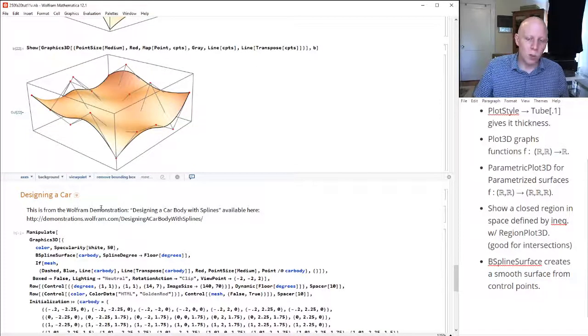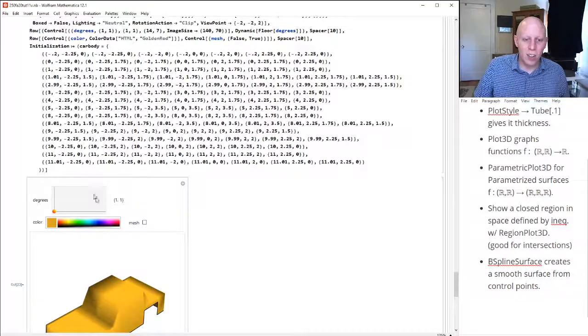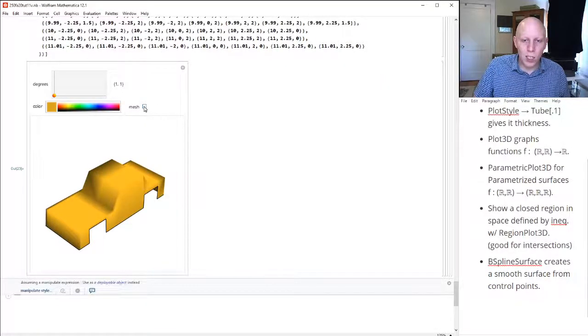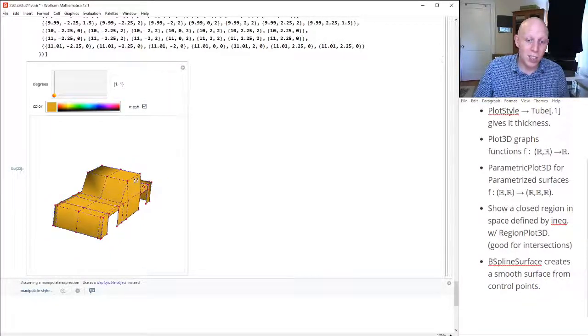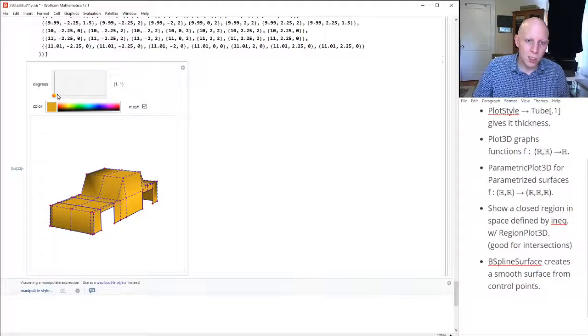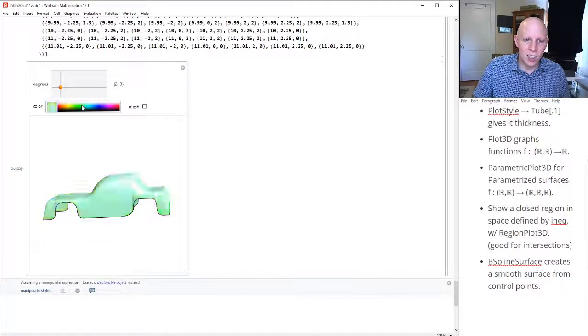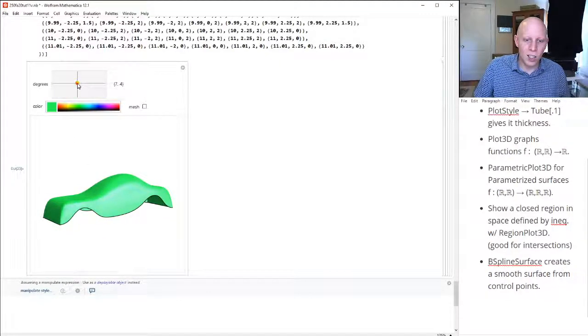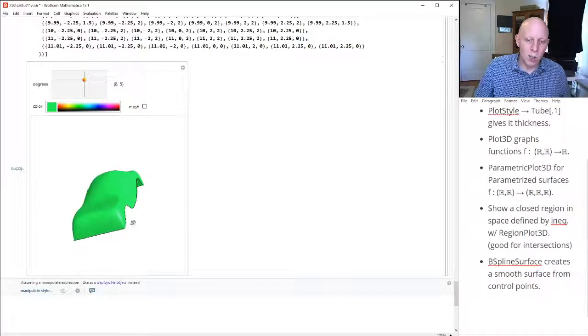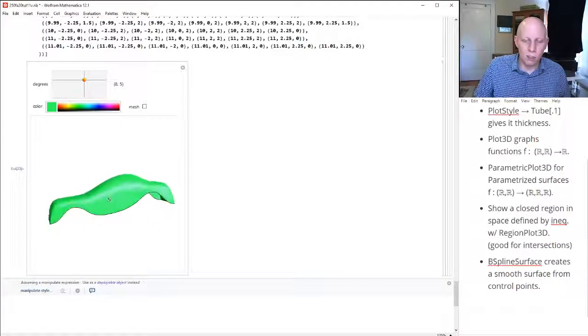And there was a really cool Wolfram demonstration, which lets you take this and given the points here, you can change the dimensions of the points, the dimensions of the spline and get a different looking car. You can change the color. And so different degrees of splineness give different shaped cars.